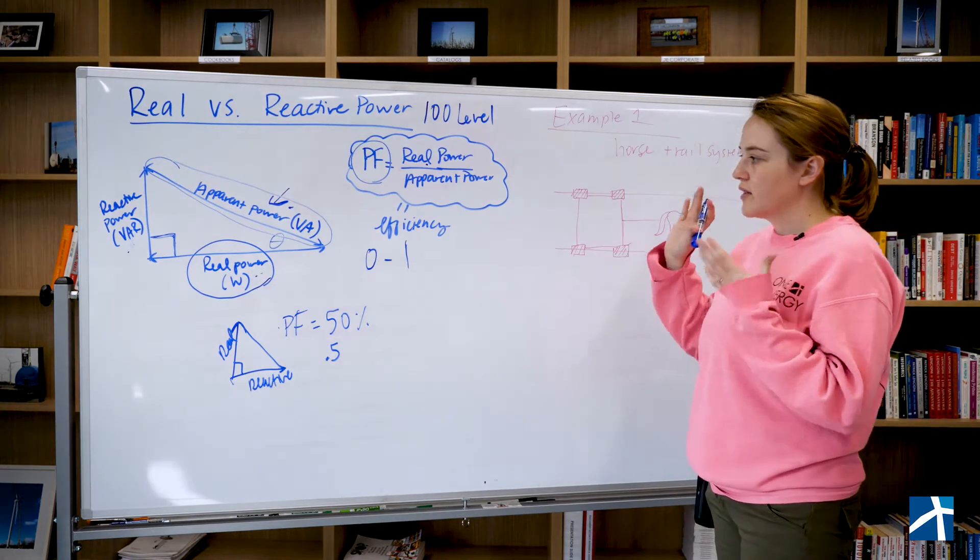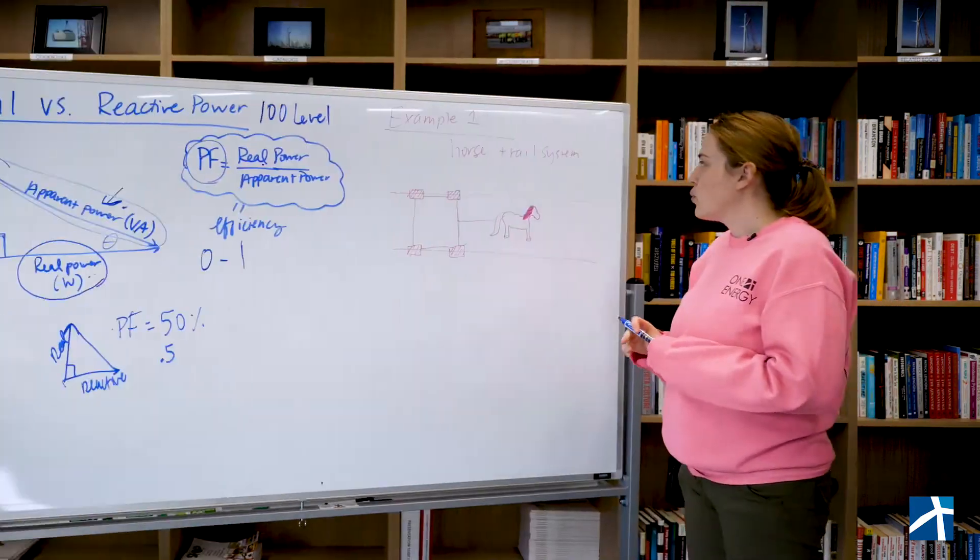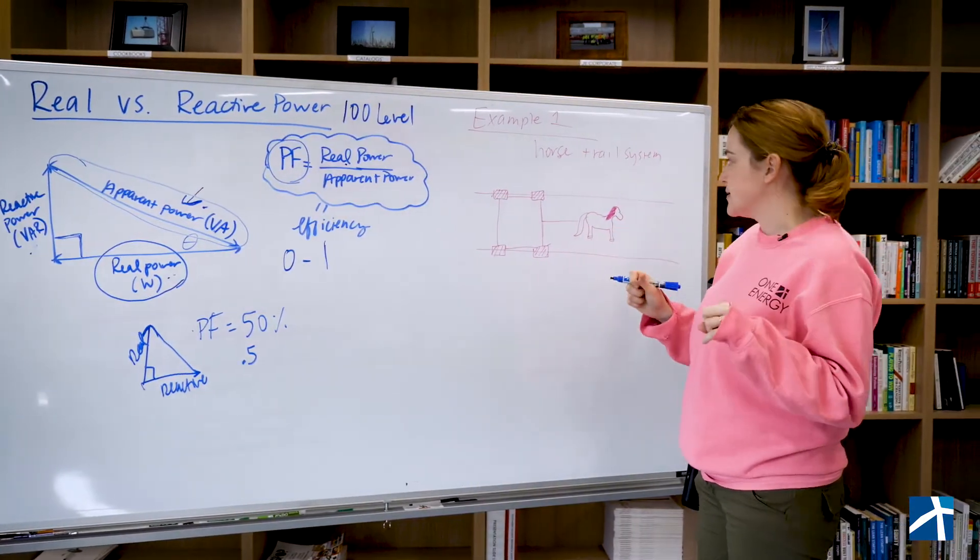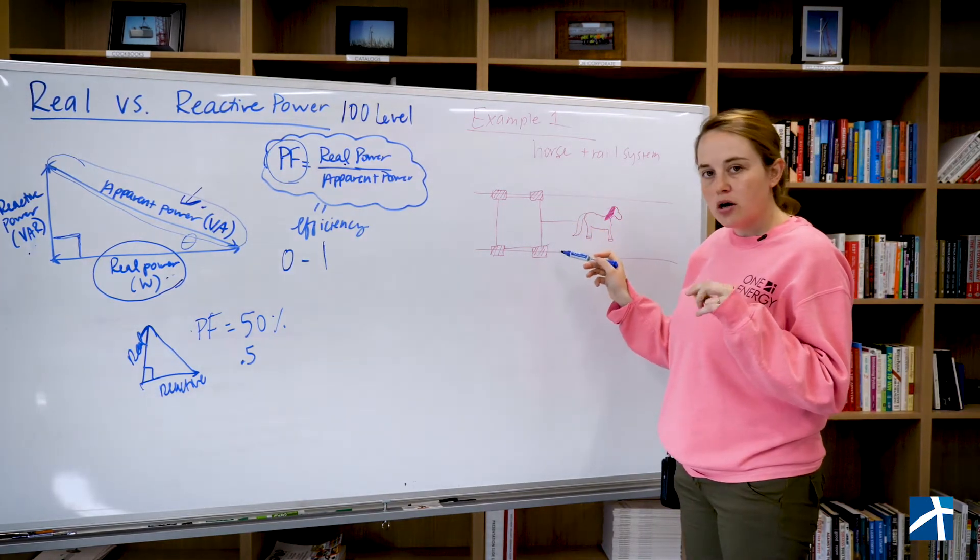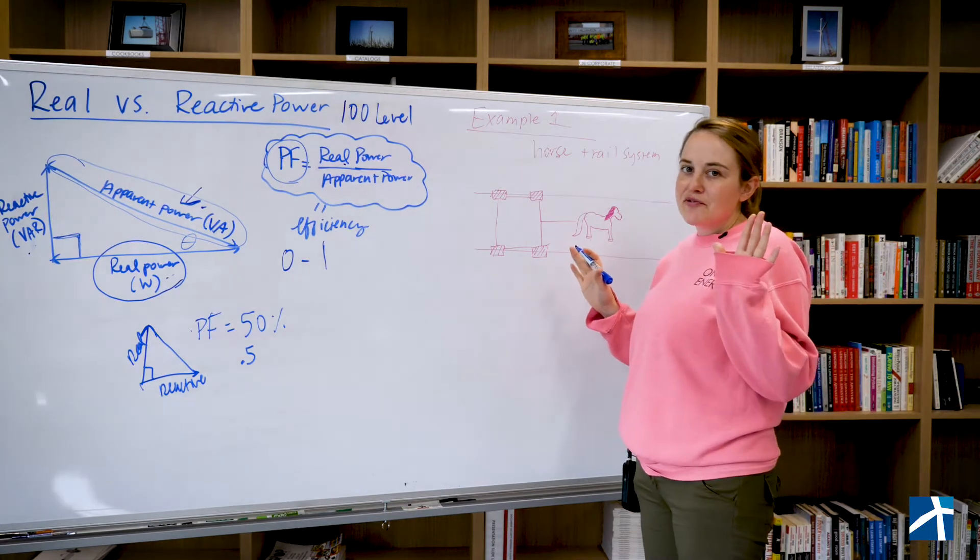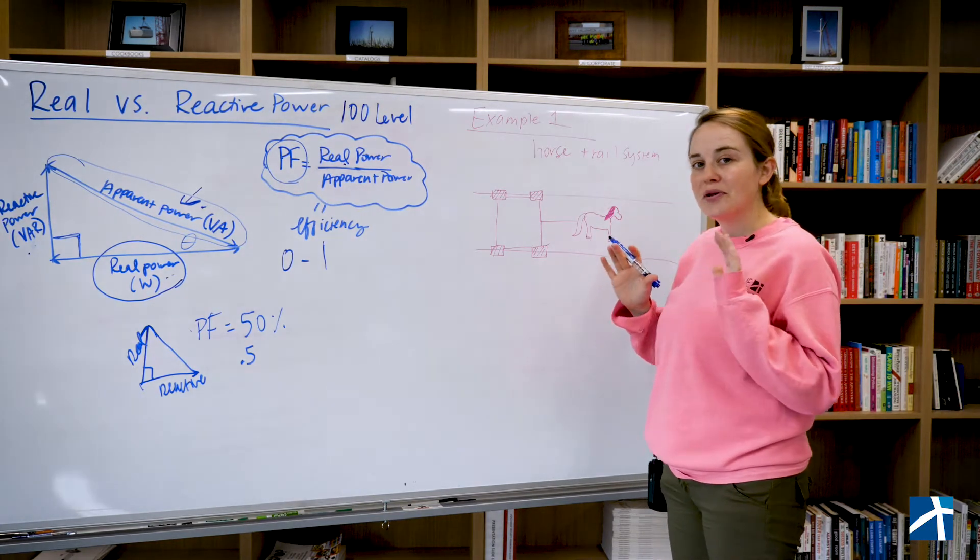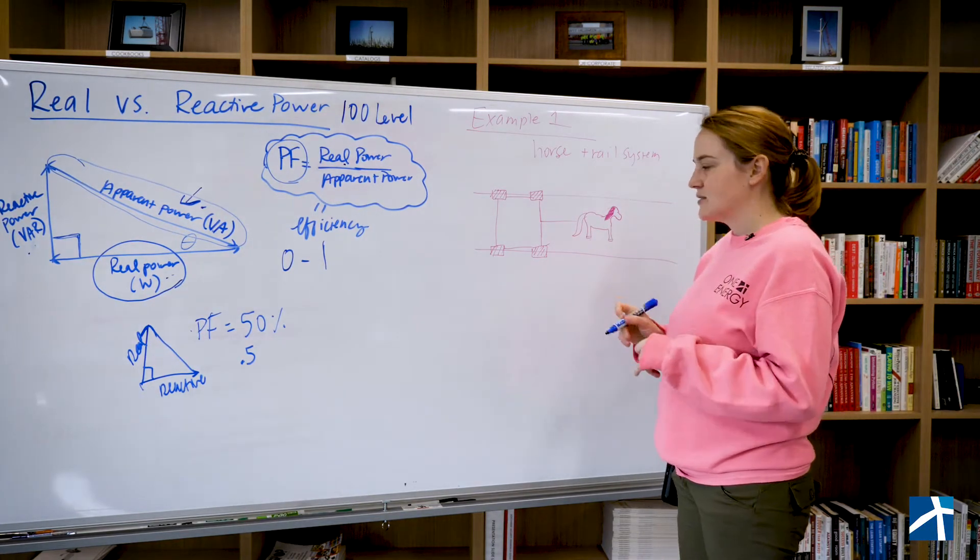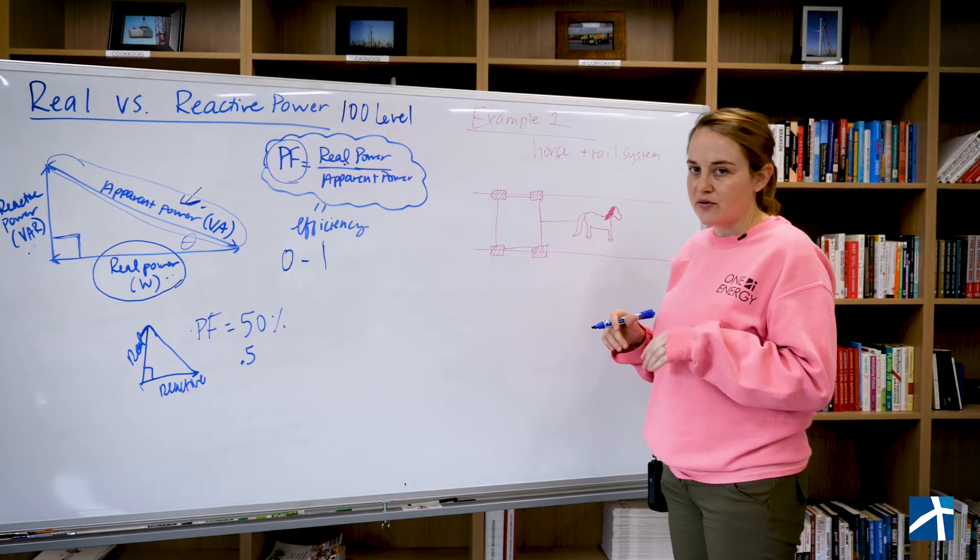So these are the concepts we're going to be using. We're going to look at a horse and a rail system. The horse is pulling a cart on a rail system. Now, I'm not super familiar with horses or pulling anything on rail systems. This is just an easy example that you can find online.